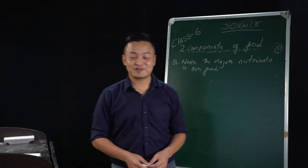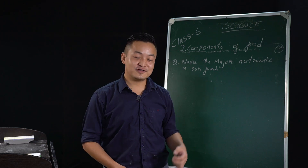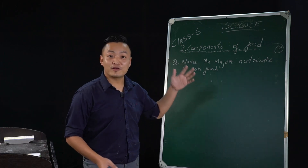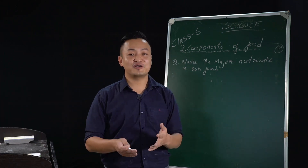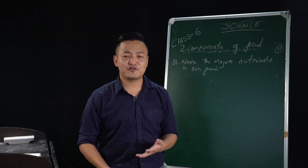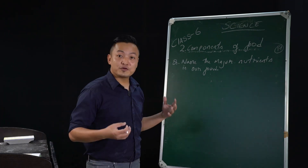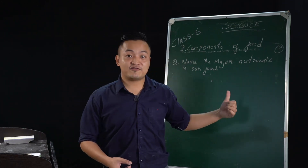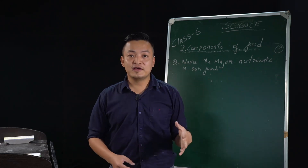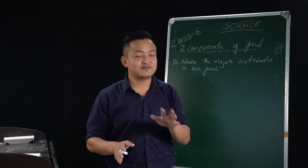Hello, dear class 6 students, welcome back. This is your science teacher Ben. I'm here especially for you and today we'll be starting the second chapter. The name of the chapter is 'Components of Food.' Yesterday we studied about food — where does it come from, the source. Today we'll study the components of food, and even in class 5 you have studied these components. So today, on the first two pages of the second chapter, we'll talk about that very quickly.